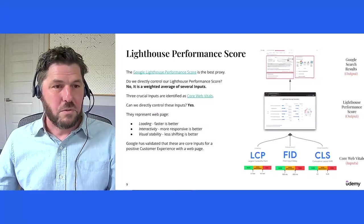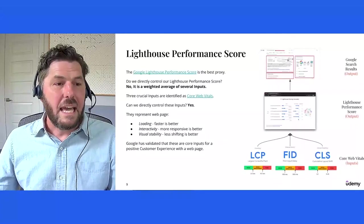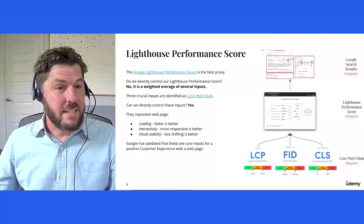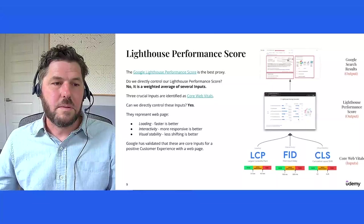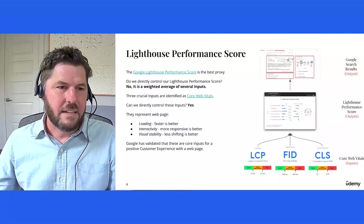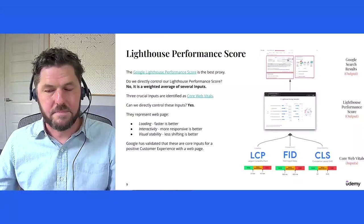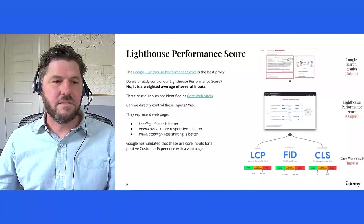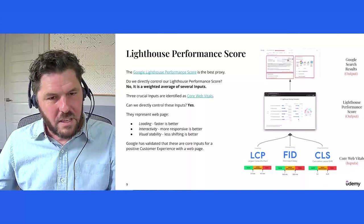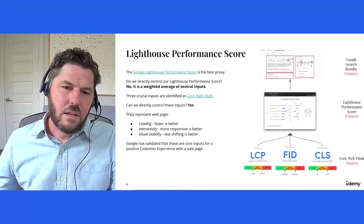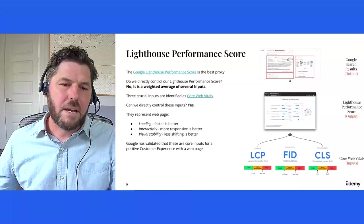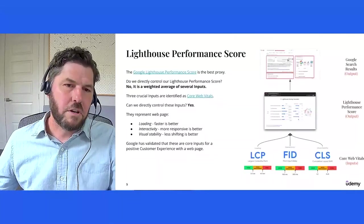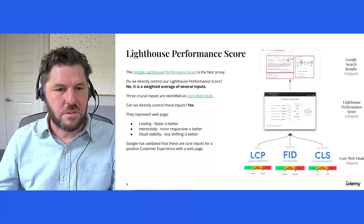And there are three crucial inputs that Google refers to as Core Web Vitals that feed into the Lighthouse performance score, which in turn is the best proxy to great Google search results, which is the ultimate output that we want to drive. Can we directly control these inputs, Google Core Web Vitals? Great news is that we can, and these represent a web page load performance, faster is better. Web page interactivity, more responsive is better. And visual stability of the page. So as it loads and paints on screen, less visual shifting is better. And Google has validated that these core inputs are key to a positive customer experience with a web page. And so here, just like in my personal example, we can see how Google Core Web Vitals as inputs are measurable, trackable, and observable, and causally feed into and influence a great Lighthouse performance score, which in turn causally influences great Google search results.